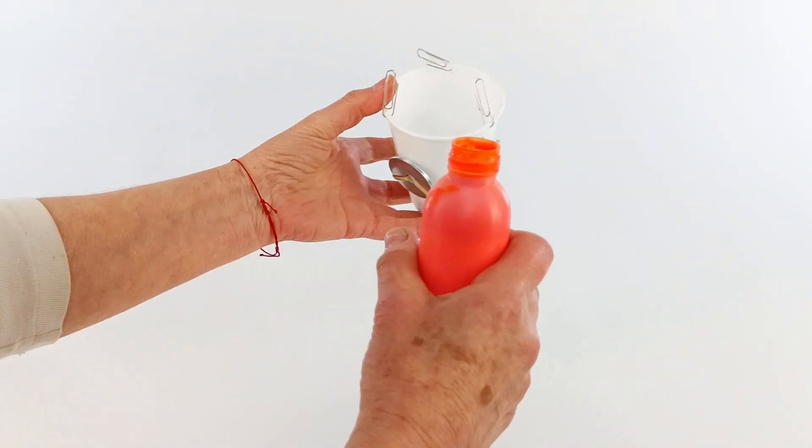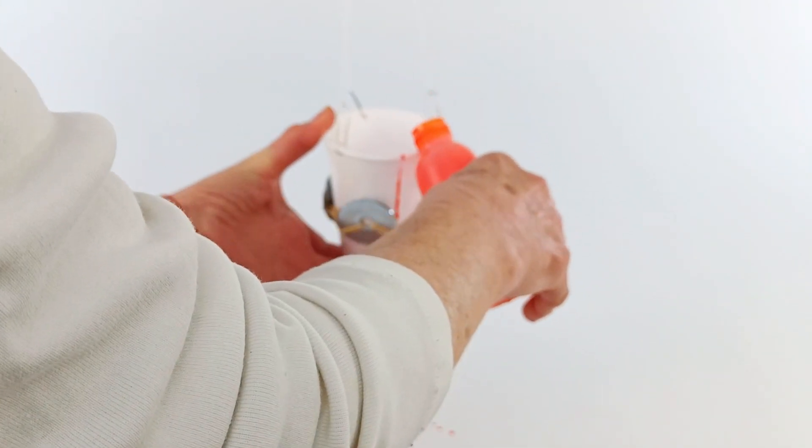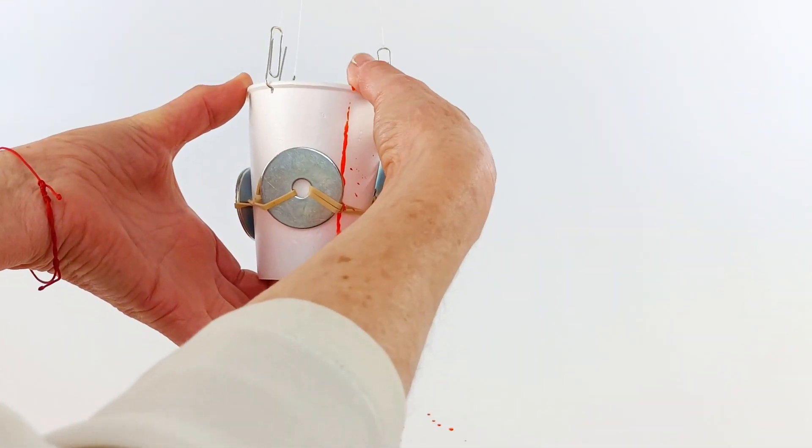So here's our mixed red. We're going to put that in our cup. Make sure you put your finger over the hole in the bottom. Pour a little bit of paint in there and then we're going to let go and watch our designs take shape. And there we go. There's our pendulum painting.